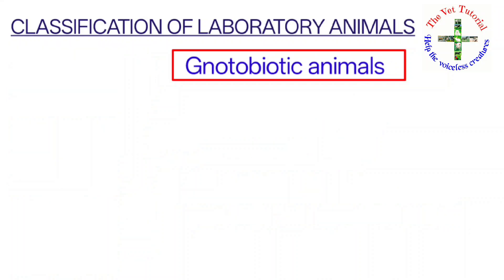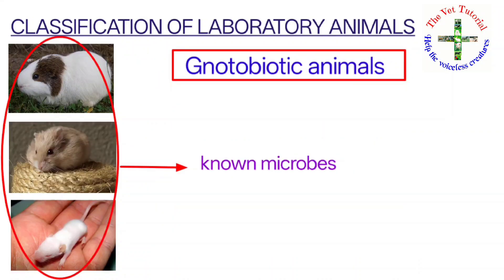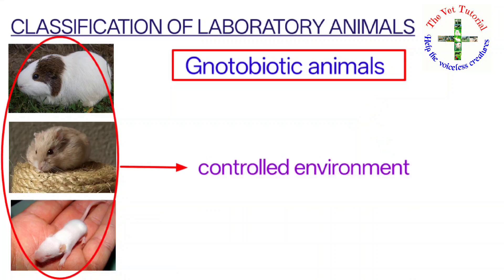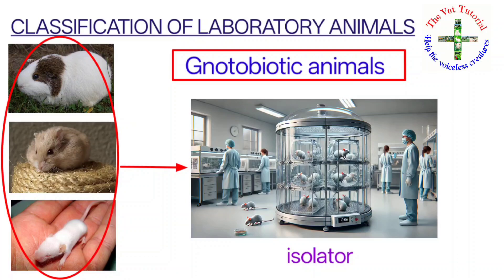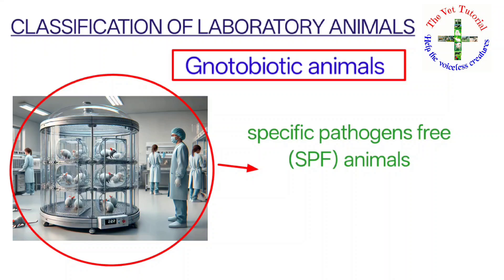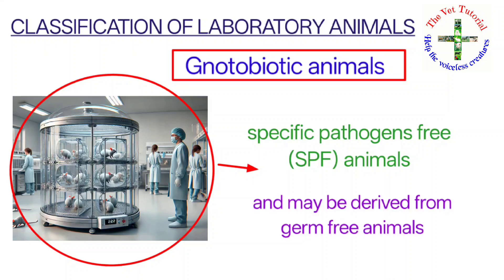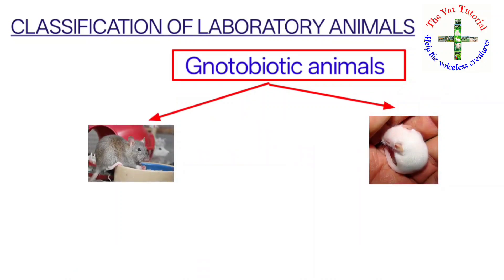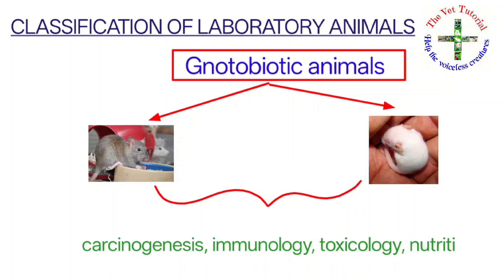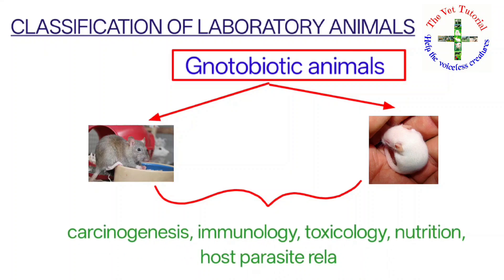Notobiotic animals are animals with known microbes — such as viruses, bacteria, fungi, and protozoa. These animals must be bred in a controlled environment in equipment called an isolator. They are the foundation stock for producing specific pathogen free (SPF) animals and may be derived from germ free animals. Notobiotic rats and mice are used to study carcinogenesis, immunology, toxicology, nutrition, and host-parasite relationships.